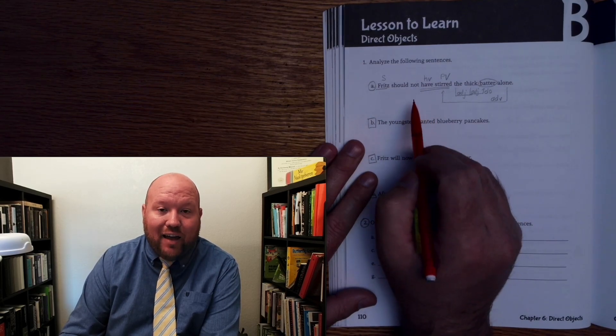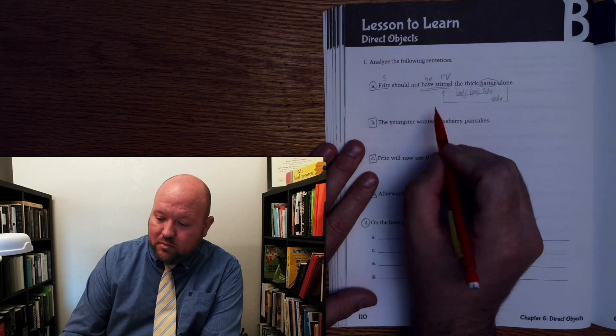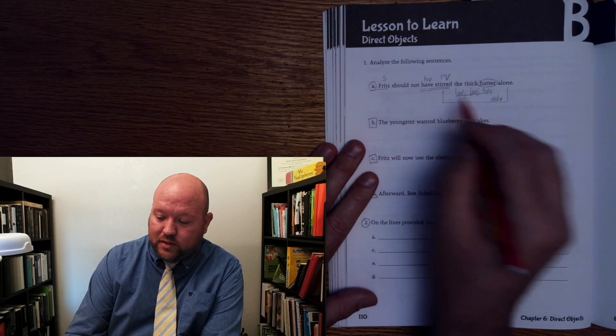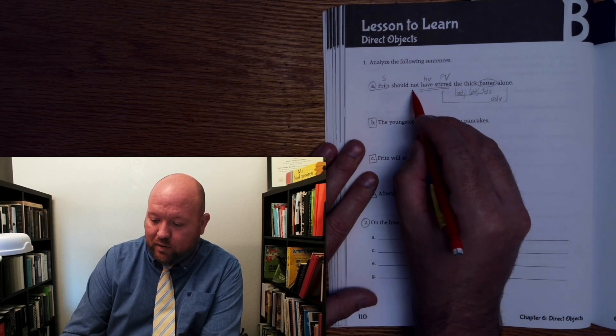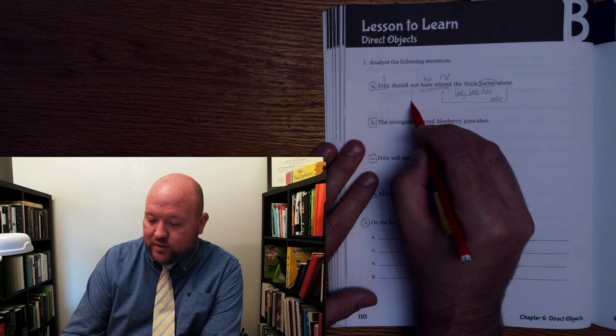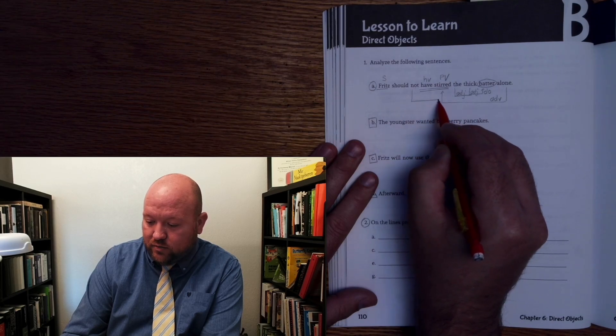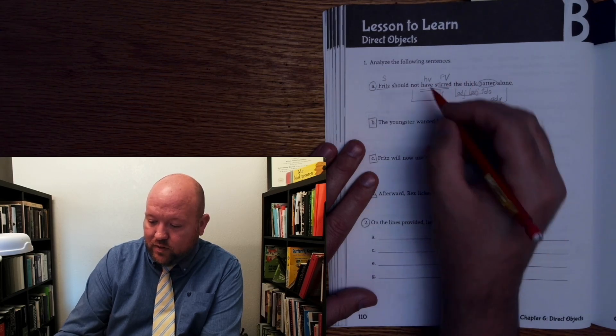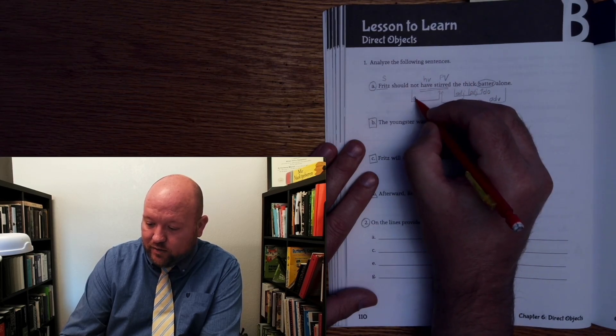Now we have 'not.' Remember, 'not' is a special kind of adverb — we think of it as the negative adverb. It negates, or is the opposite of what we're talking about. So in this case, Fritz didn't stir it. Come over and up, and it is an adverb.